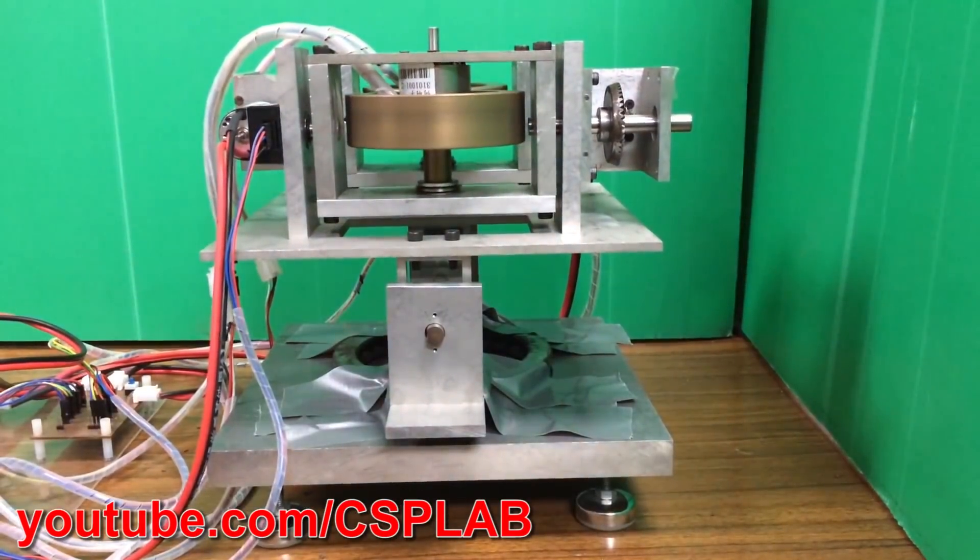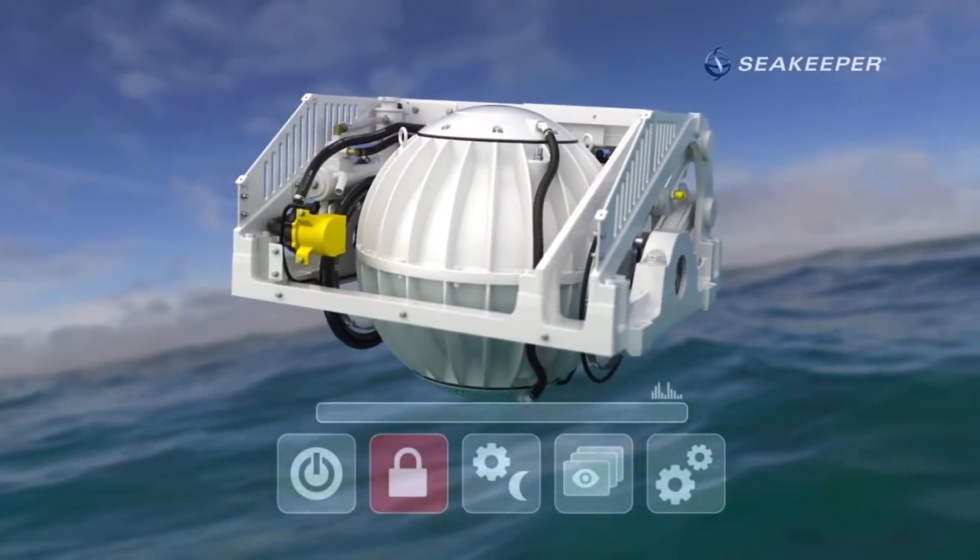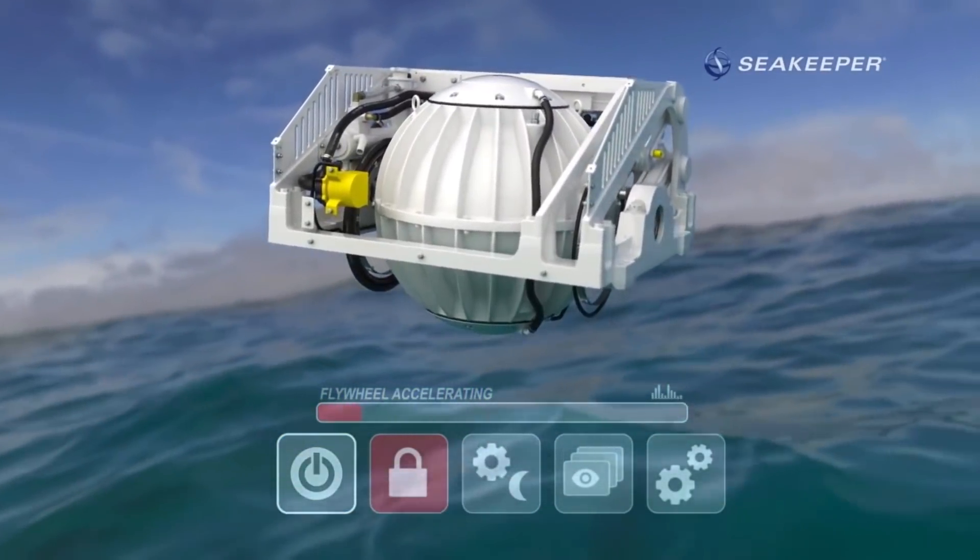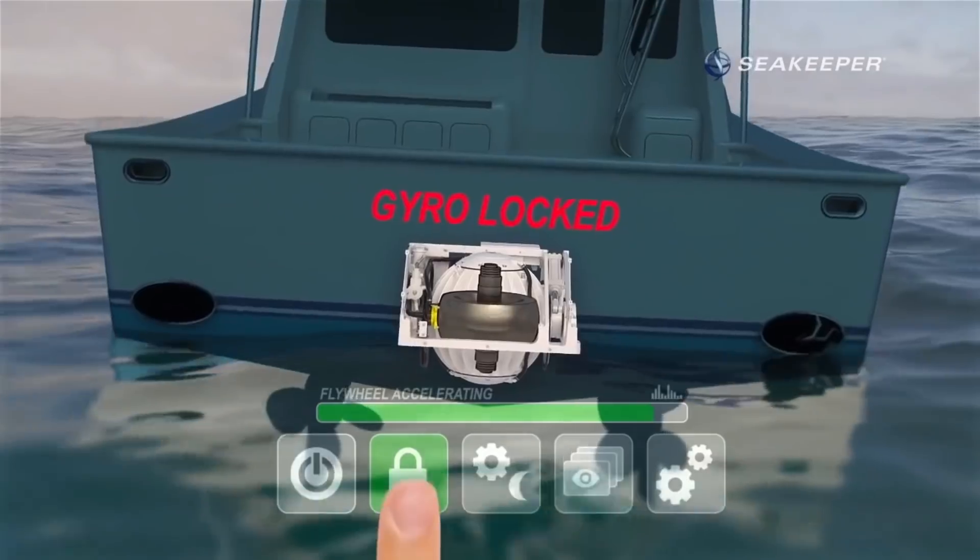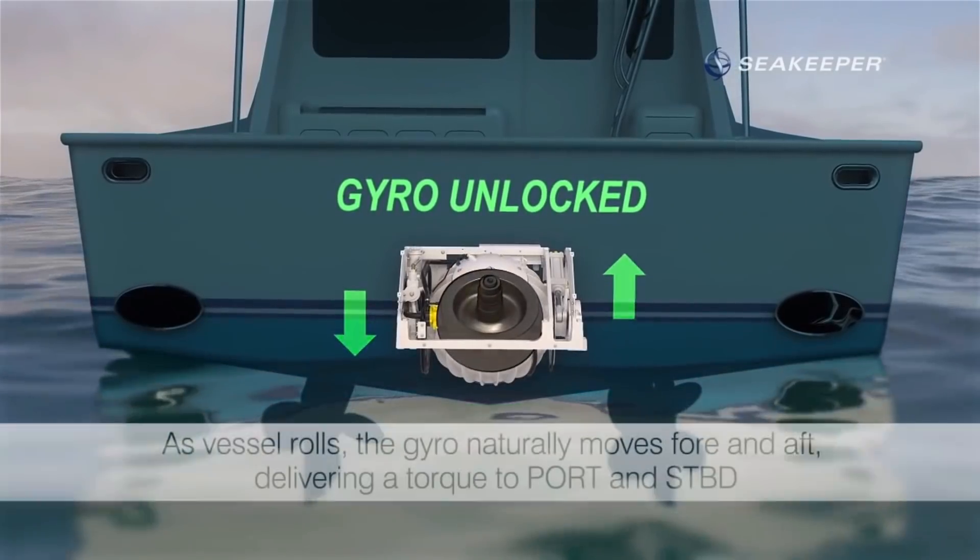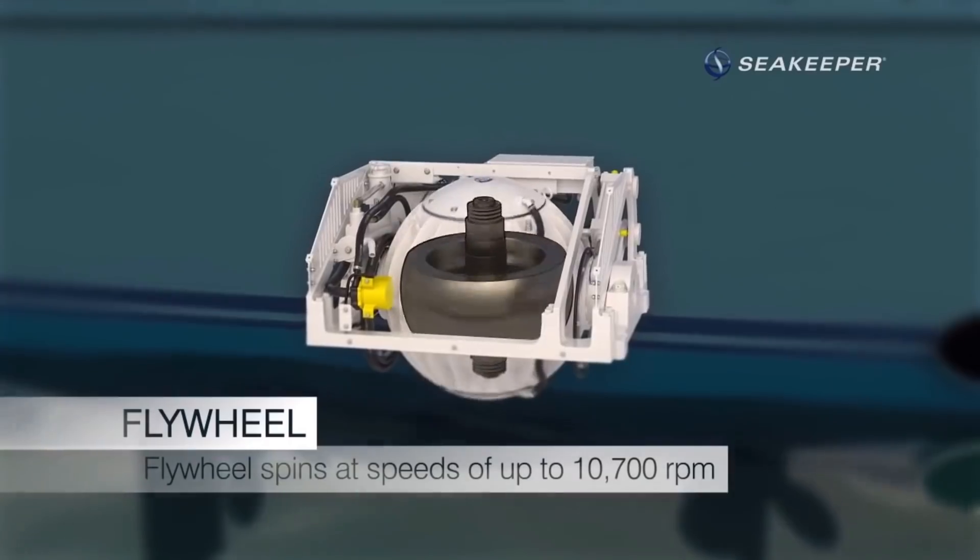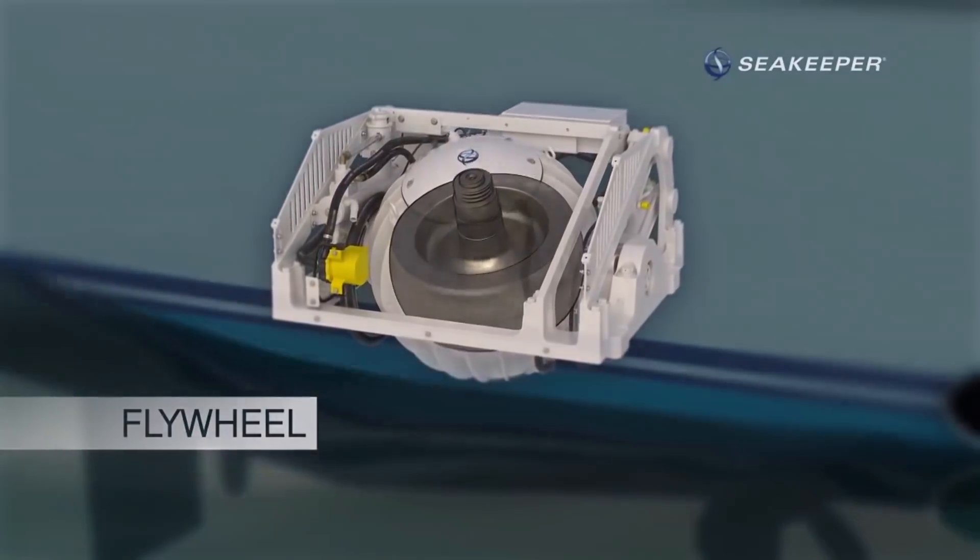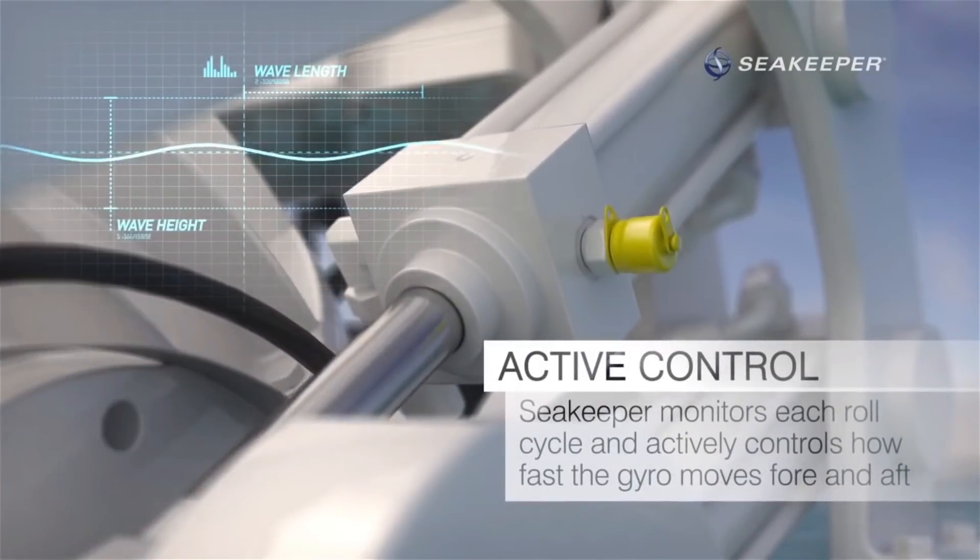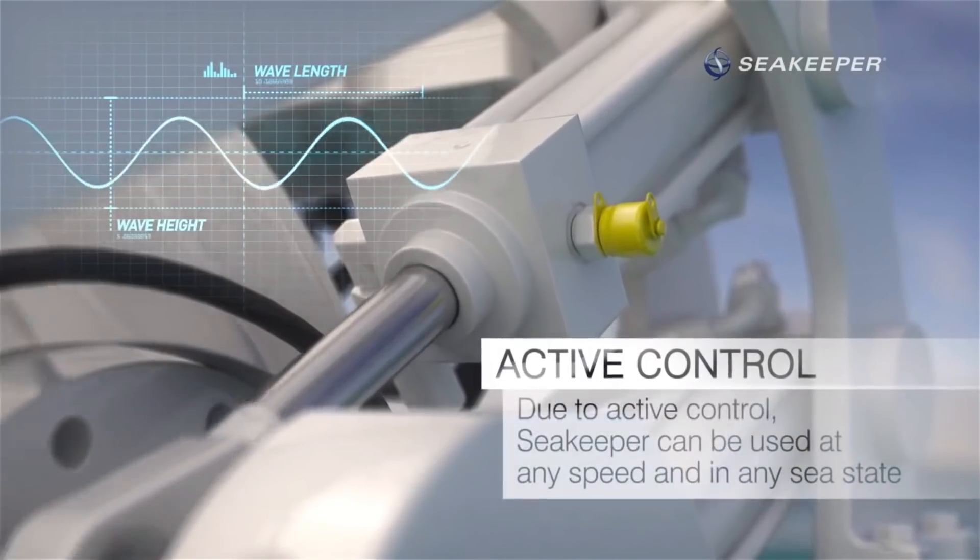There are also various commercial devices available that use this method for stability. This is the sea keeper which is for yachts. You'll notice that the gyro moves in tilt and that stabilizes the boat in roll. It runs at about 10,000 rpm. As far as I can tell the flywheel weighs 100kg but it seems to work pretty well. It has active control so it's measuring the roll of the boat and compensating the gyro in tilt.